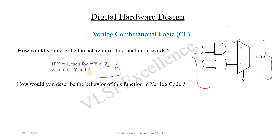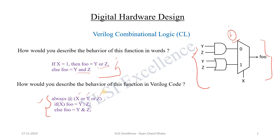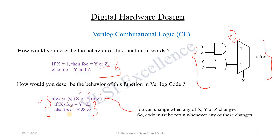Now let's see how we can specify the behavior of this circuit in Verilog code. Here we are using the procedural block to specify the behavior. This example is combinational logic, and we are specifying its behavior using the procedural block. In the always block, we have used x, y, and z as part of the sensitivity list. The behavior is specified as: if x equals 1, then foo will be y OR z; else foo will be y AND z.